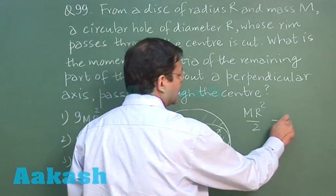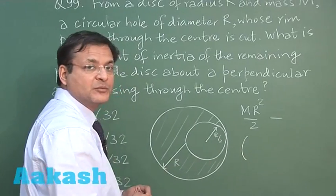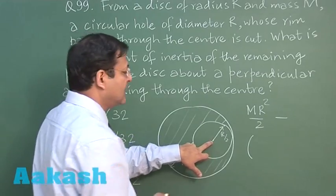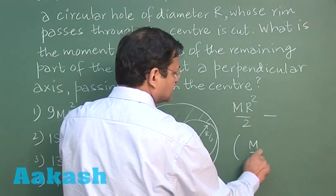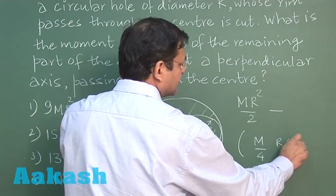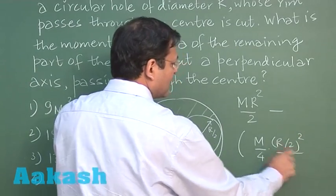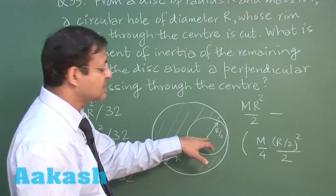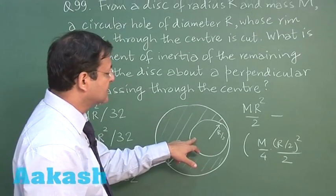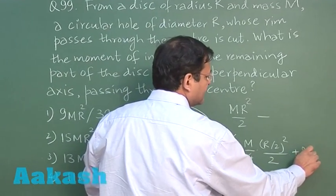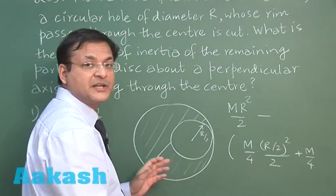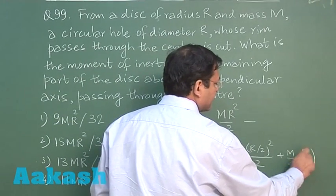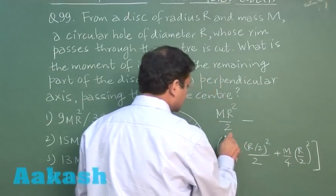So tell me how much will be? You see, parallel axis theorem will have to be applied. First you calculate the moment of inertia of the remaining disc about this central mass. It will be m by 4 into r by 2 whole square divided by 2. This was the moment of inertia of the disc cut out about the central mass. Now you shift it here. So that means plus m by 4 into how much distance has been shifted? r by 2 whole square. So r by 2 whole square. Now this much part of the disc is to be removed.